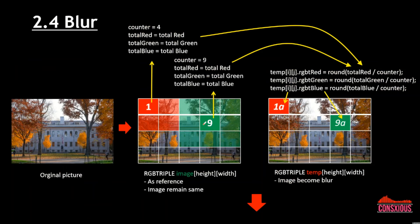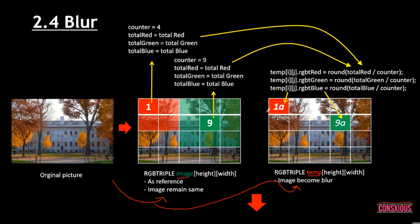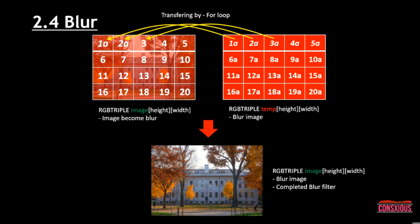For blur, we create two images: the actual image and a temporary image. We take the values from the actual image, do calculations, and put the blurred result into the temp image. We cannot write blur values back into the original image during calculation because that would corrupt subsequent calculations — for example, an already-blurred pixel would incorrectly affect neighboring pixel averages. So the easiest way is to create a separate temporary blur image as reference, then transfer it to the actual image after.